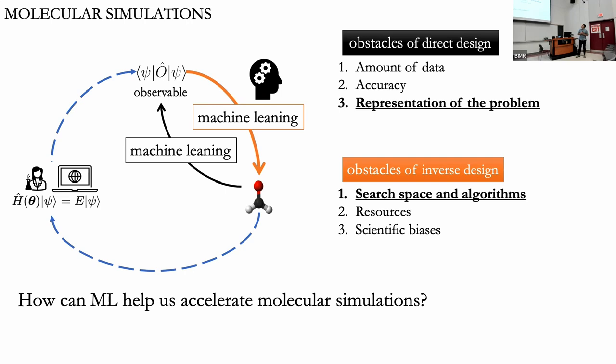Probably the most important question is: how do we represent our problem? Machine learning is also powerful enough that we can do what I call inverse design, which is trying to correlate the observable back to the input of our problem. This framework also has some caveats: is it a search or an algorithm we have to design? What are the resources? And what are the scientific biases we're going to use to accelerate this framework? This has been the big picture of part of my research.